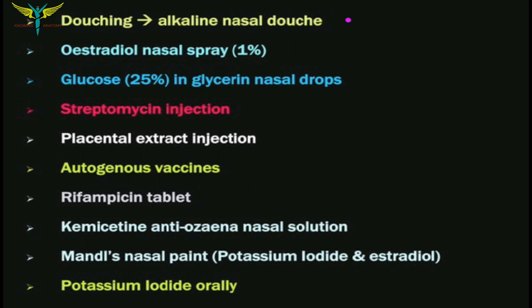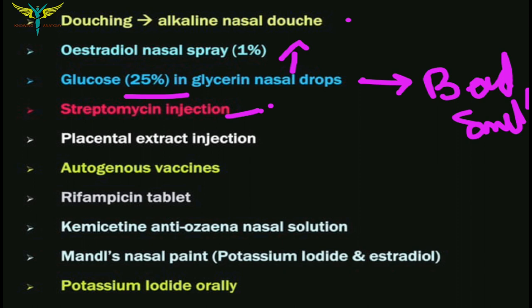Medical treatment includes alkaline nasal douching and estradiol nasal spray, which increases vascularity of the nasal mucosa leading to regeneration of seromucinous glands. 25% glucose in glycerin is used after crust removal — the nose is painted with this solution, which inhibits the growth of proteolytic organisms responsible for the bad smell. Streptomycin 1 gram per day for 10 days has given good results in reducing crusting and odor; it is also effective against Klebsiella organisms.